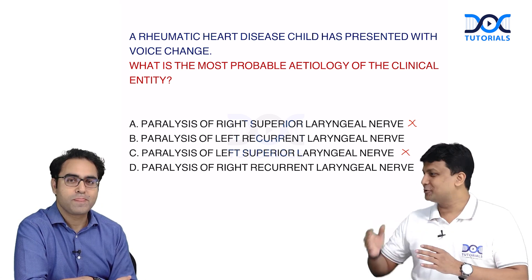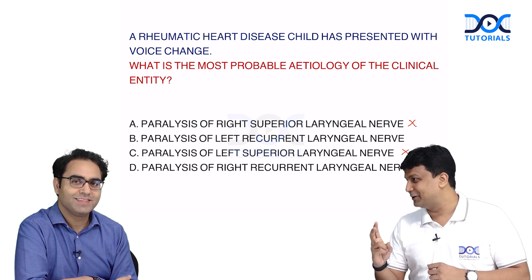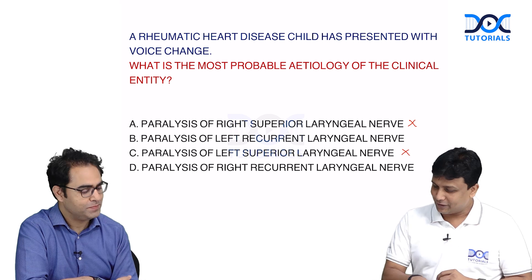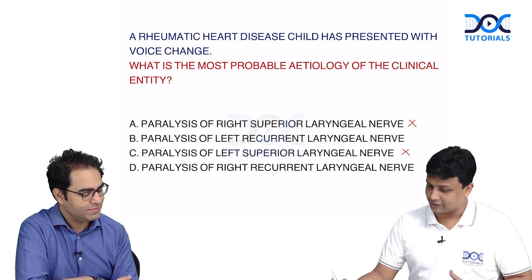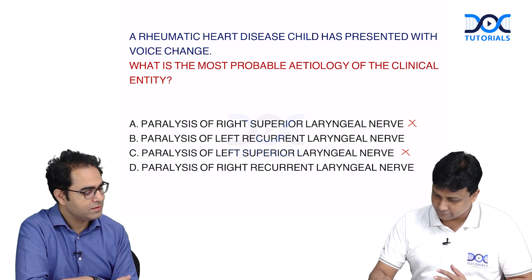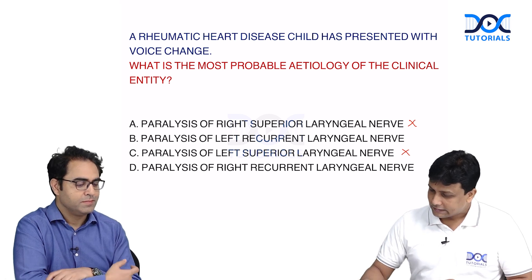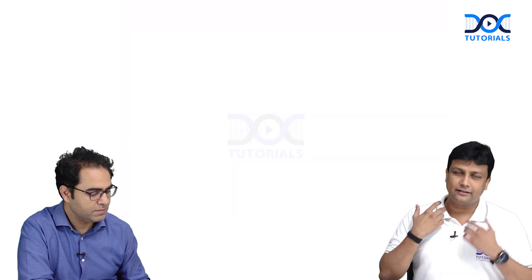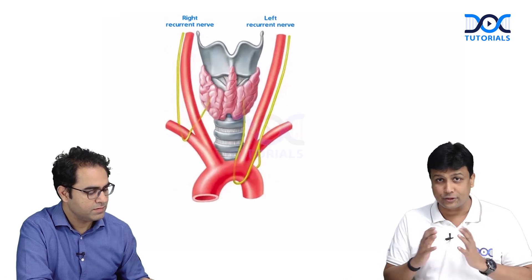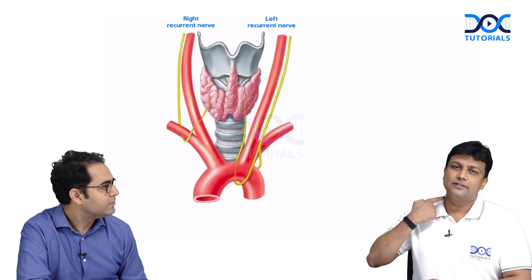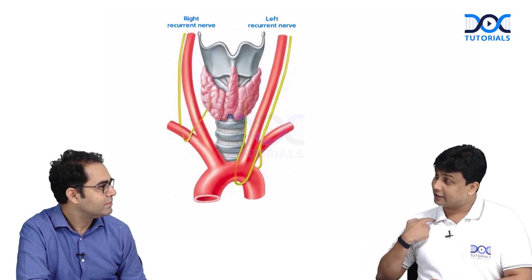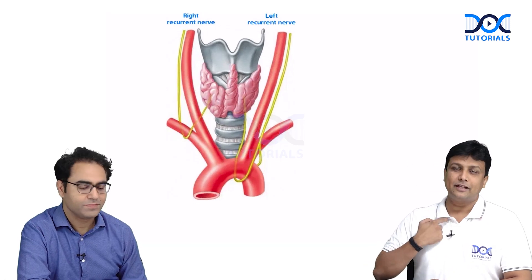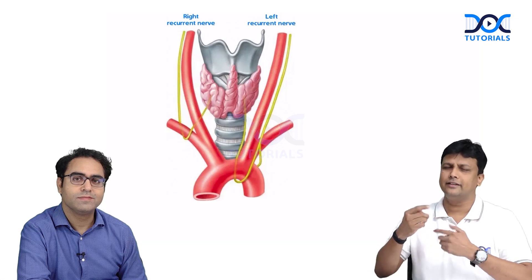Students always say in the exam they could eliminate two but were confused between the remaining two. So now coming to the recurrent laryngeal nerve — I'll show one diagram here to give a clear idea. When you see the course of the right and left recurrent laryngeal nerve: the right recurrent laryngeal nerve goes down and takes a turn around the right subclavian artery.